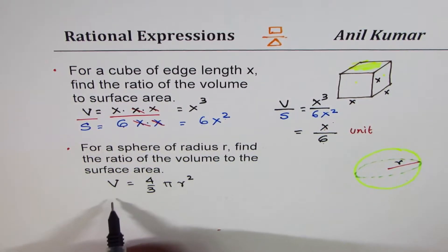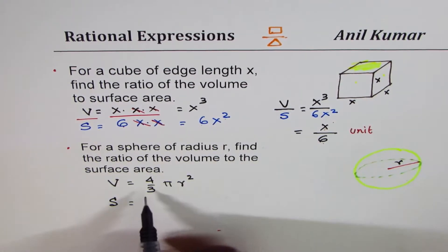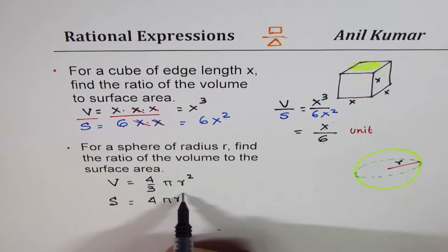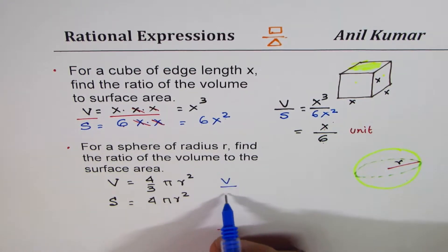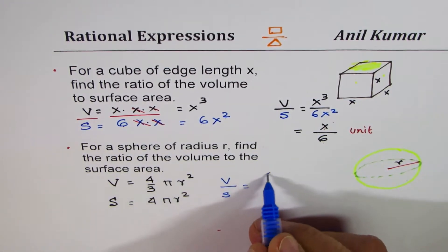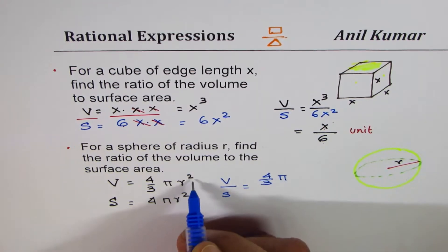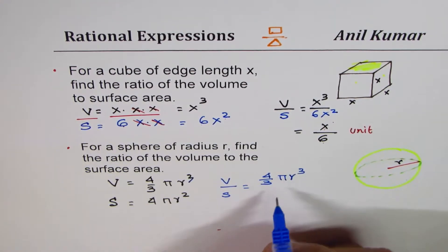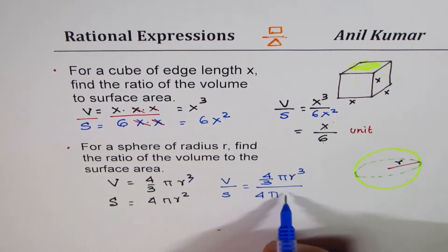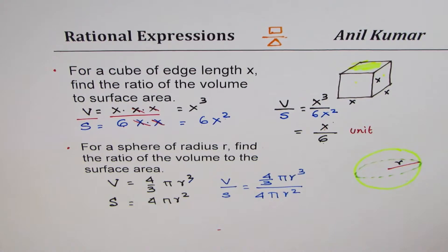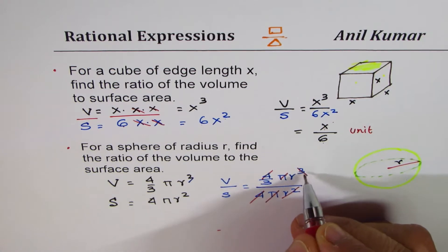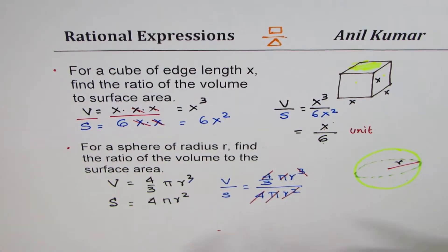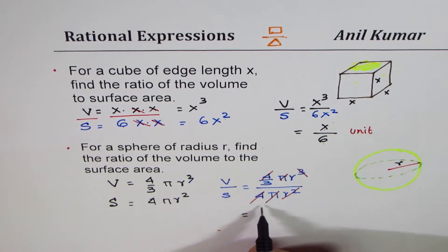And the surface area of a sphere is 4πr². Their ratio will be, that is volume over surface area, will be we can write here 4/3 πr³ divided by 4πr². When you simplify, 4 and 4 will cancel, π and π will cancel, r² will cancel 2 r's, so you are left with r here. And therefore you could write this as the 3 comes in the denominator, r/3.